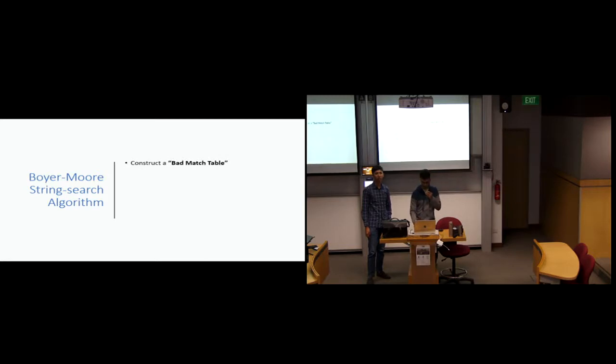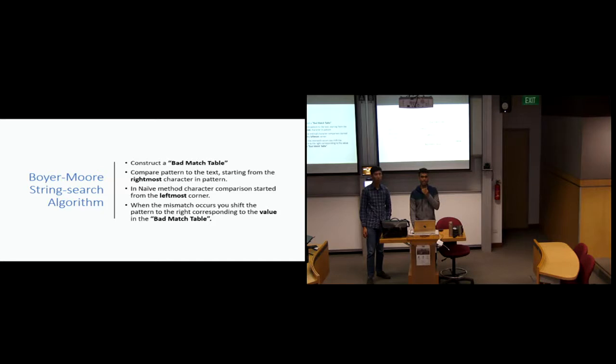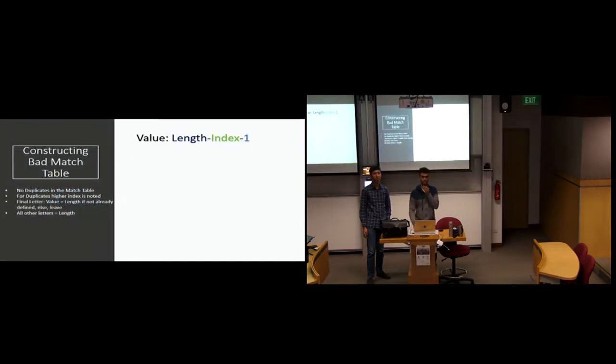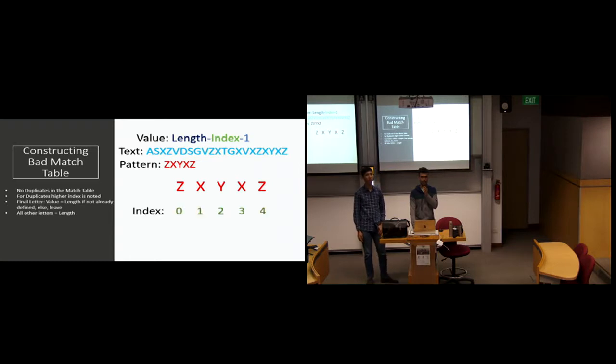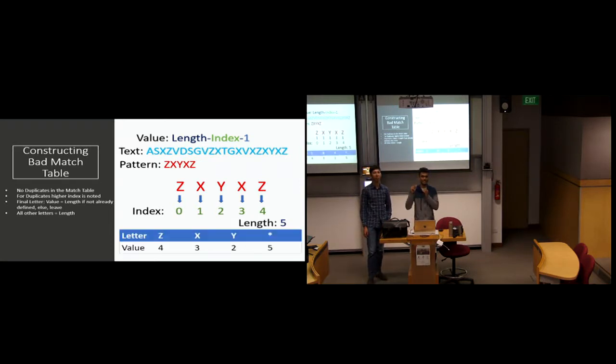For this algorithm to work, you need to construct a bad match table, which I'll explain in the next slide. You don't compare the elements anymore from the rightmost side. You compare it from the leftmost side. When there is a mismatch, you get the value from the bad match table. Here, this is the formula you use to get the value. It's length minus index minus 1. From the pattern, you get the index from left to right. You start from 0 because in almost all computational things, you start index from 0. The length is equal to 5. For z, it's 5 minus 0 minus 1, which is 4. Consequently, you get the value of x and y. For all the characters which aren't there in the pattern, the asterisk symbol represents that. For that, the value is of the length, which you can see on the left-hand side.